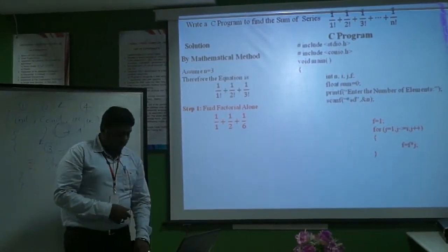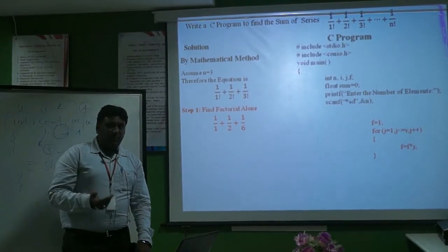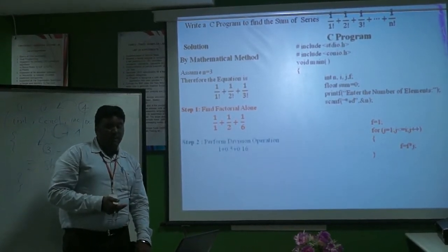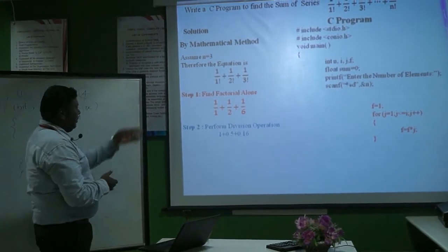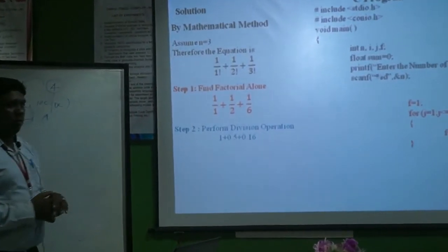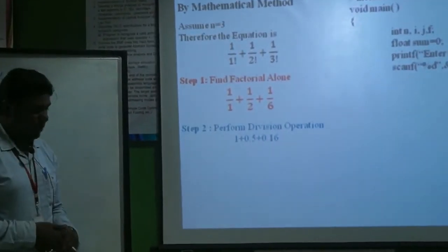From mathematical point of view, the next difficult part is division operation. I did my division operation next: 1 by 1 is 1, 1 by 2 is 0.5, and 1 by 6 is 0.16.